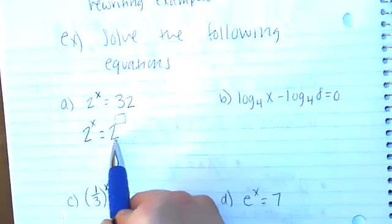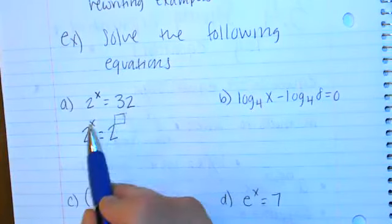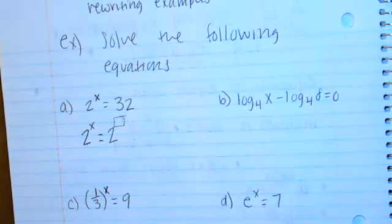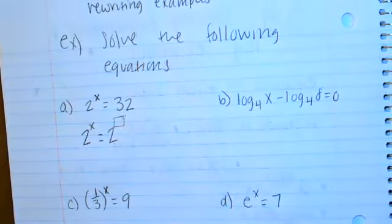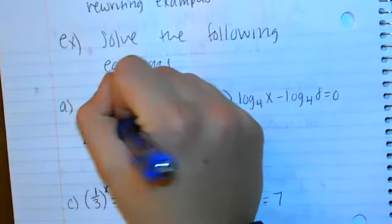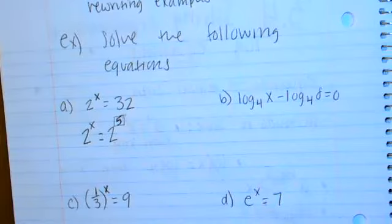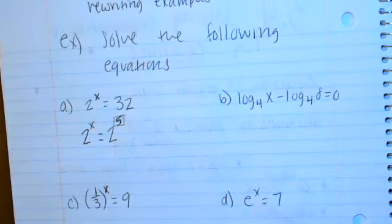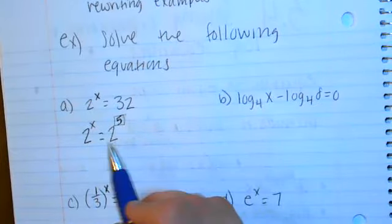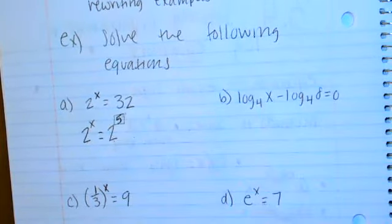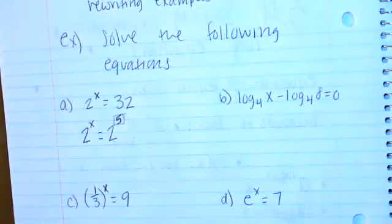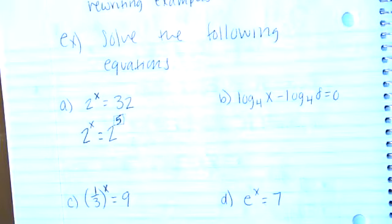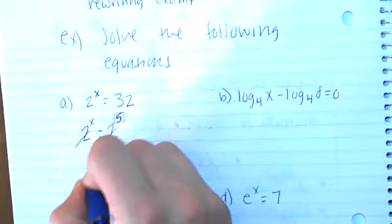If I can get both sides as base 2, I can drop the 2s and set the exponents equal to each other. So we work through: 2 squared is 4, 2 cubed is 8, and 2 to the fifth is 32. So 2 to the x equals 2 to the fifth. These are two equivalent statements — I rewrote 32 as 2 to the fifth without touching the left side. The 2s cancel, leaving x equals 5.